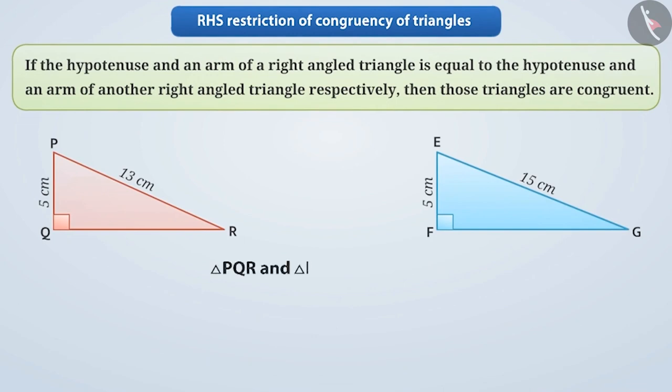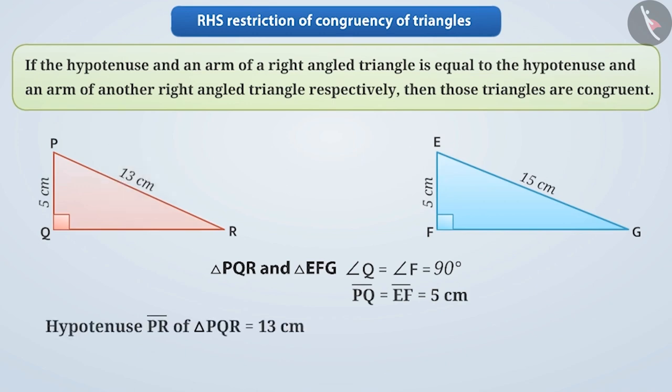Now let's talk about triangle PQR and triangle EFG. Among these, angle Q equals angle F equals 90 degrees, the side PQ equals EF equals 5 cm, but the hypotenuse of triangle PQR is 13 cm while the hypotenuse EG of triangle EFG is 15 cm. If one of these triangles is placed on the other,